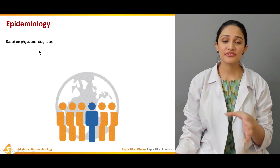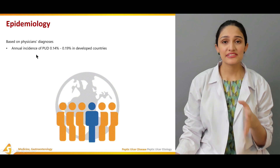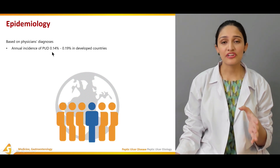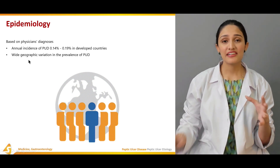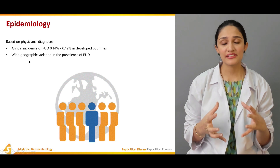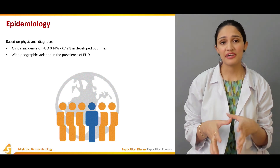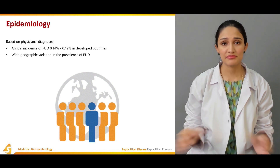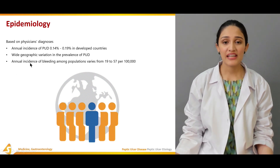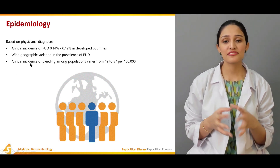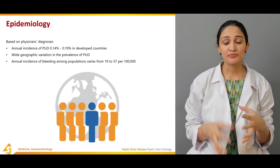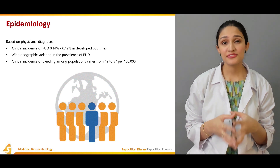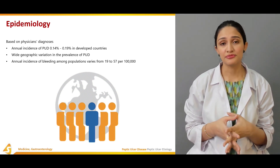Based on physician diagnosis, the annual incidence of peptic ulcer disease is around 0.14% to 0.19%, specifically in developed countries. There is a very wide geographic variation in the prevalence of peptic ulcer disease, and the annual incidence of bleeding — a complication of peptic ulcer disease — is around 19 to 57 per 1,000 individuals.